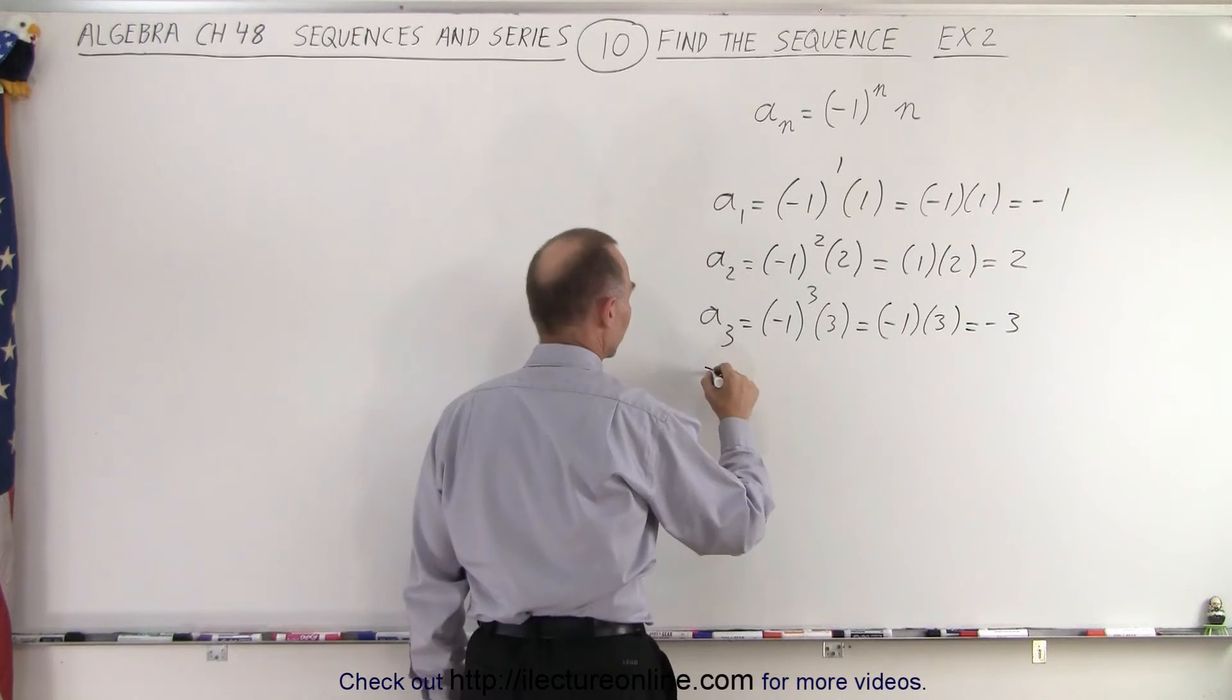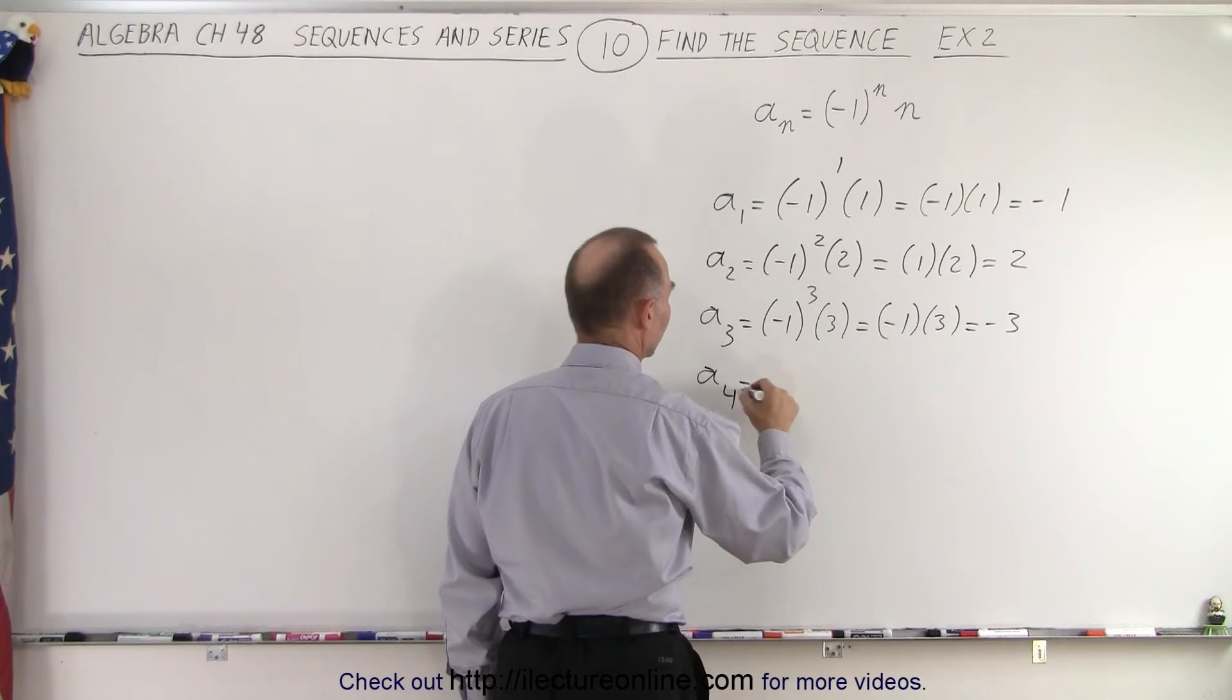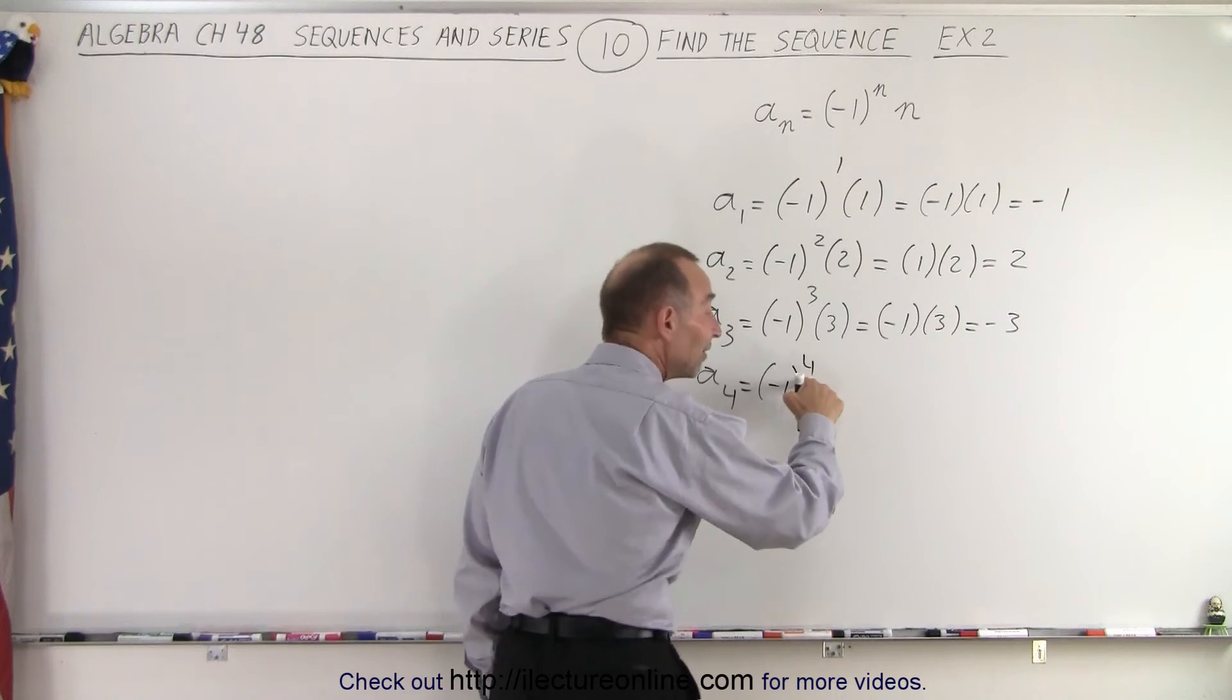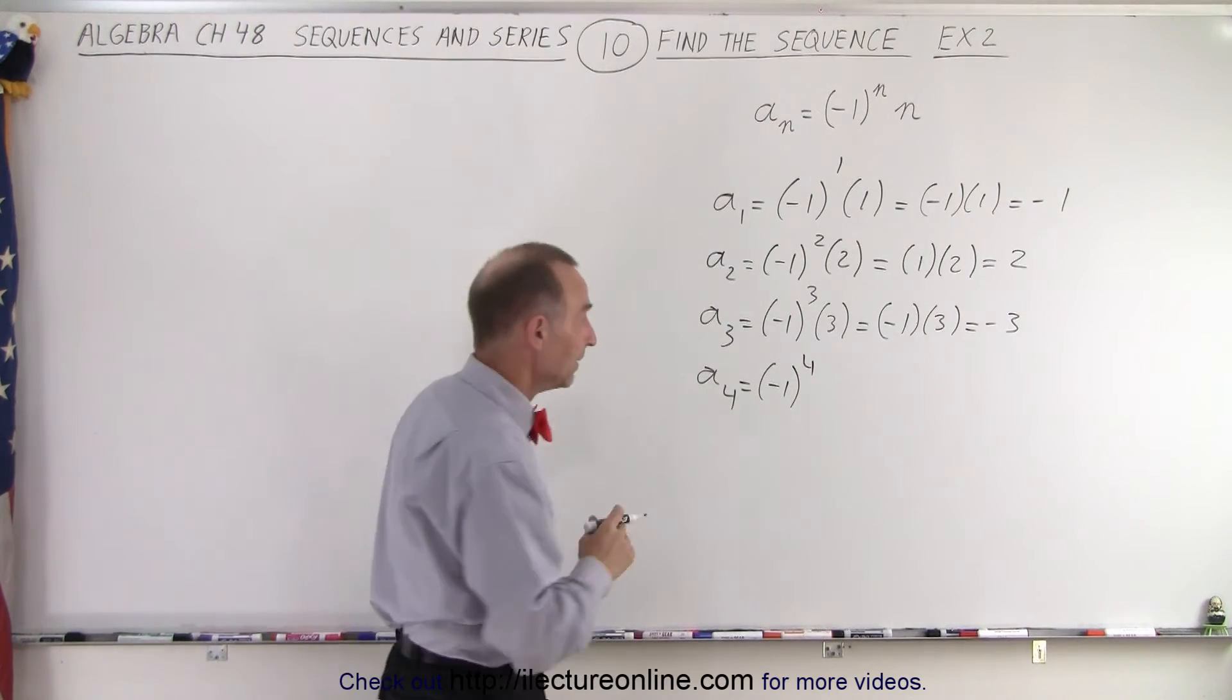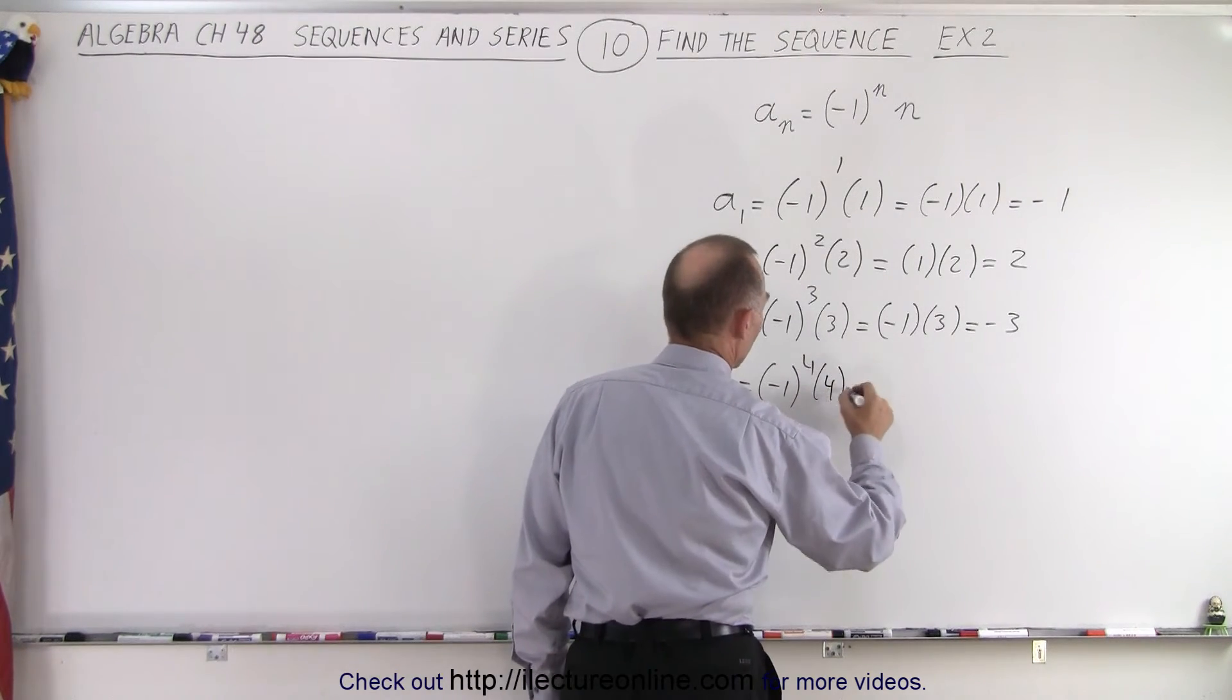And the fourth term, a sub 4, is equal to negative one. Now again it's raised to an even exponent, that becomes positive again. So times four, which is one times four, which is a positive four.